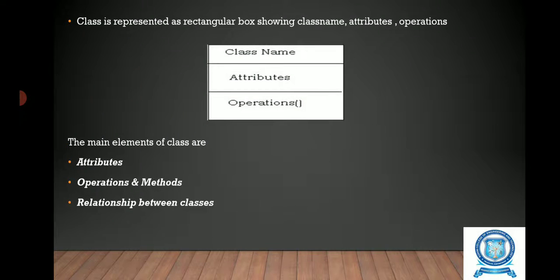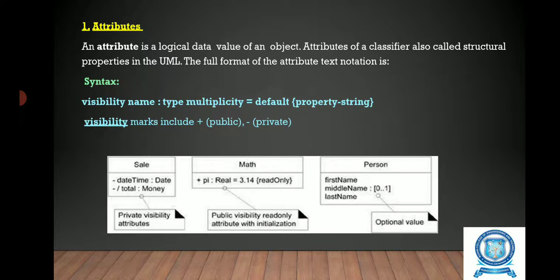The class is represented in a rectangular box showing the class name, attributes, and operations. So first in the first row we will have the class name, then the second we will have the attributes and the last we will have the operations. The main elements of the class are attributes, operations and method, and the relationship between classes.